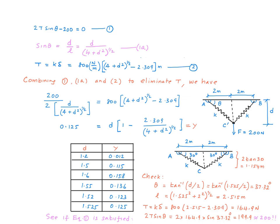Then the tension in the spring would be K times delta. K is 800. Delta is the displacement of the spring, the final length minus the initial length.